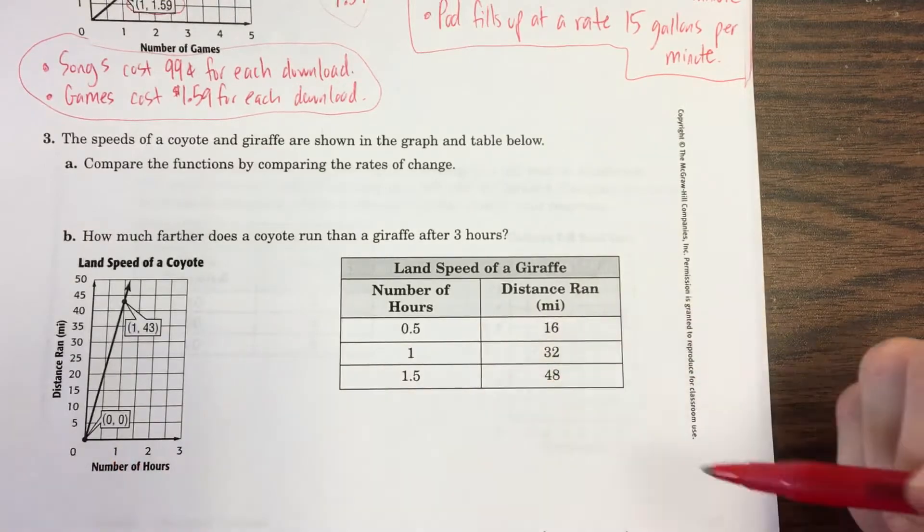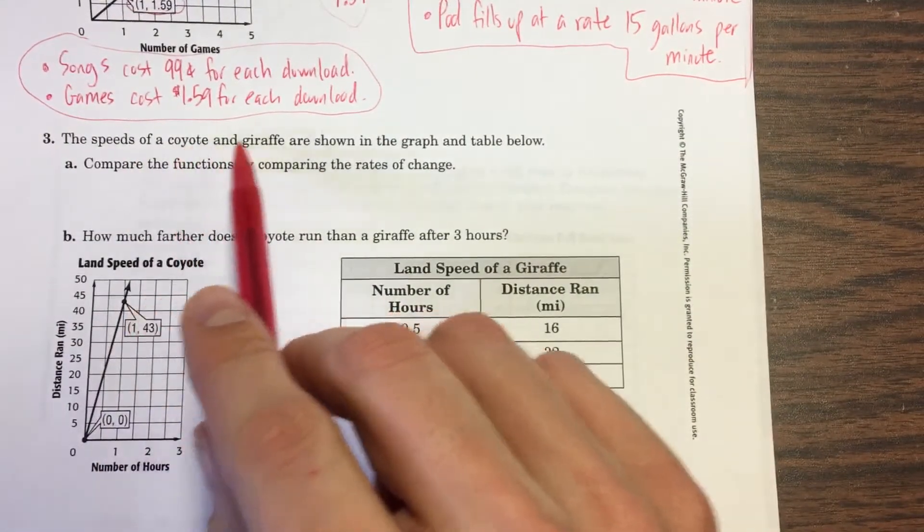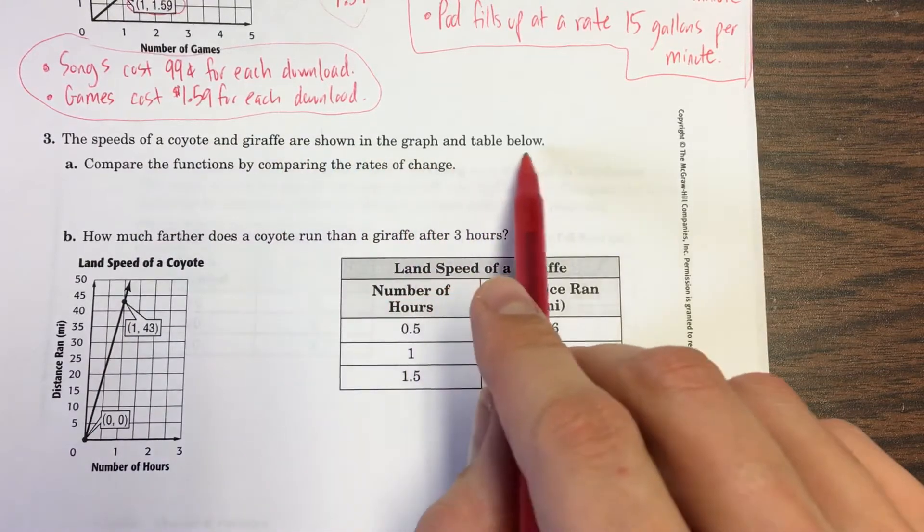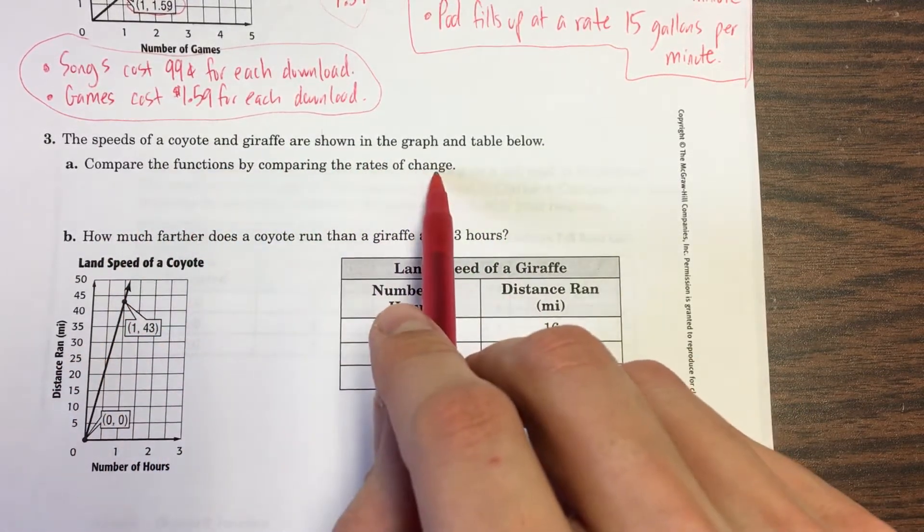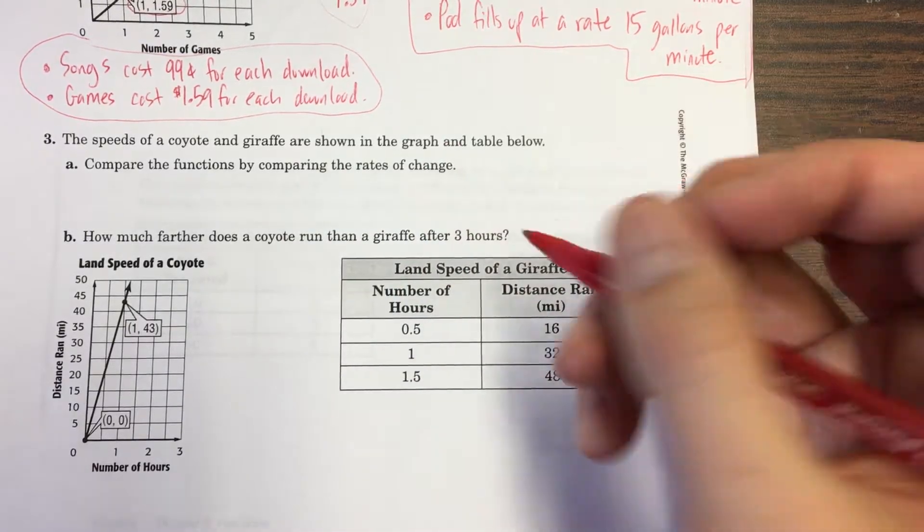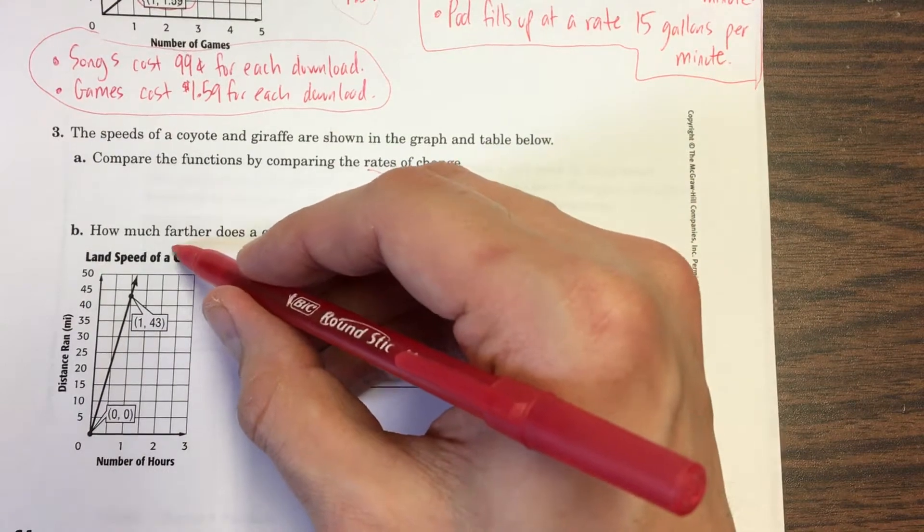Okay, one more. This one has got two charts. One is a table, one is a graph. So there is nothing hiding in a paragraph here. The speeds of a coyote and giraffe are shown in the graph and table below. Compare the functions by comparing the rates of change. Okay. The rates of change, that's the slope. So here's the coyote, situation number one.